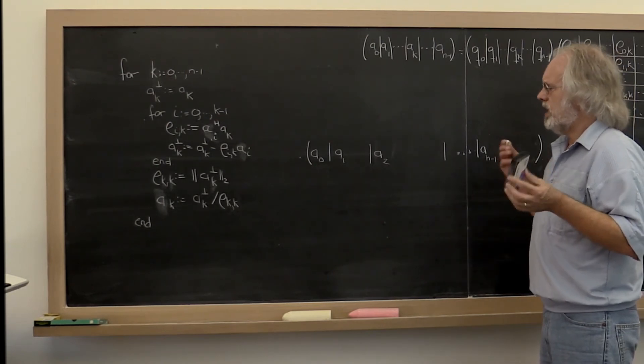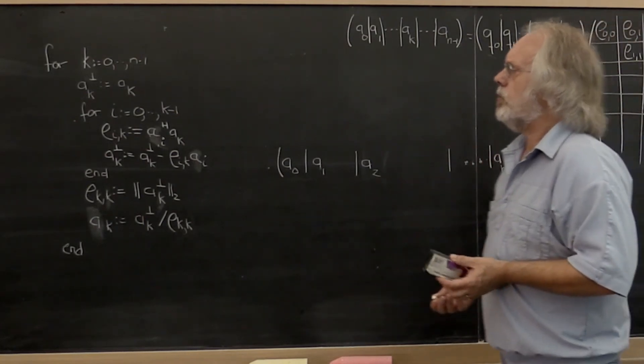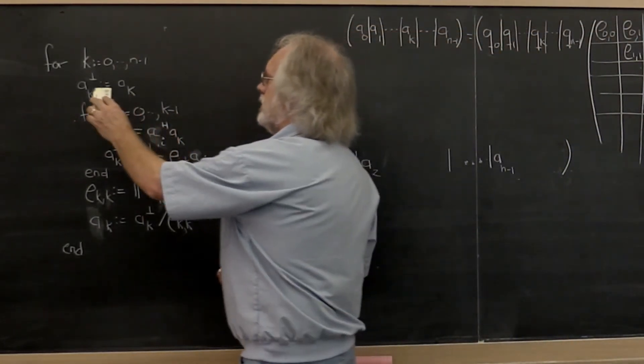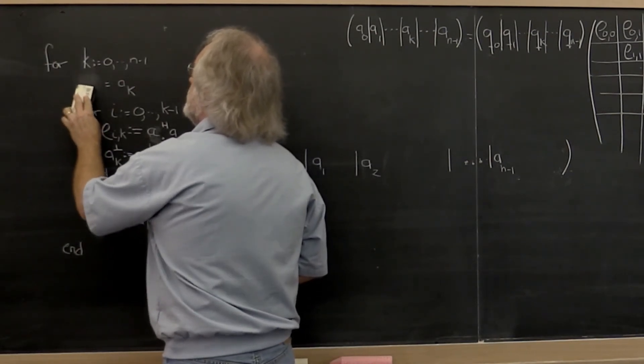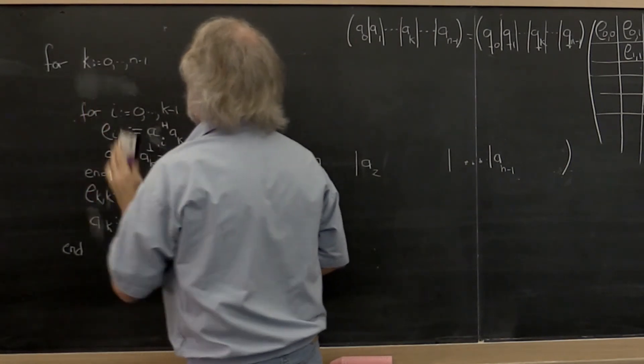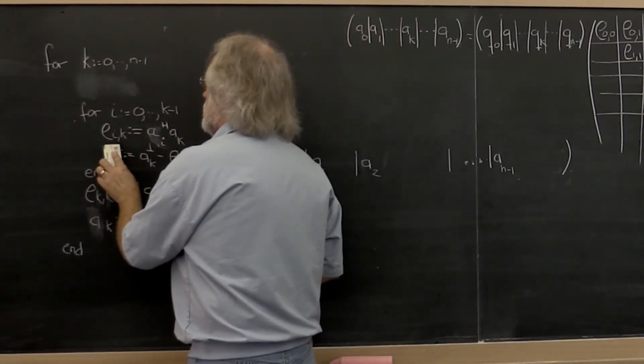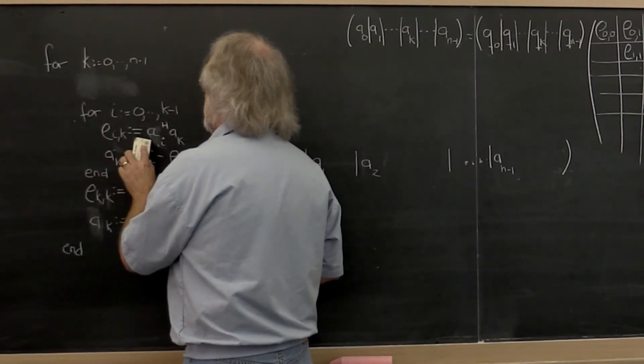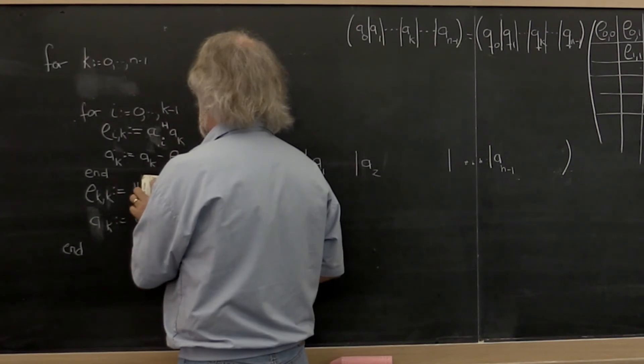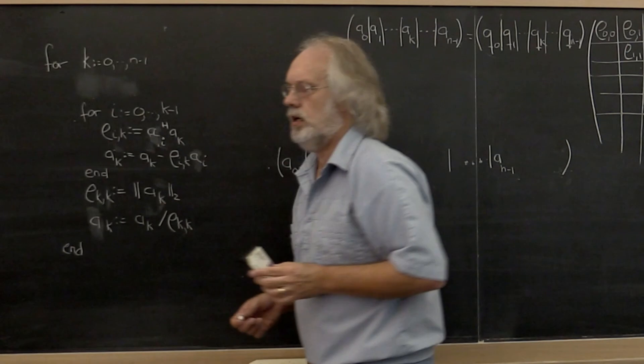Now what if we accidentally made a programming mistake? What if we accidentally forgot to create a temporary vector in which we accumulate the orthogonal component and we instead computed with what was in Ak to start out with? We would end up with this algorithm right here.